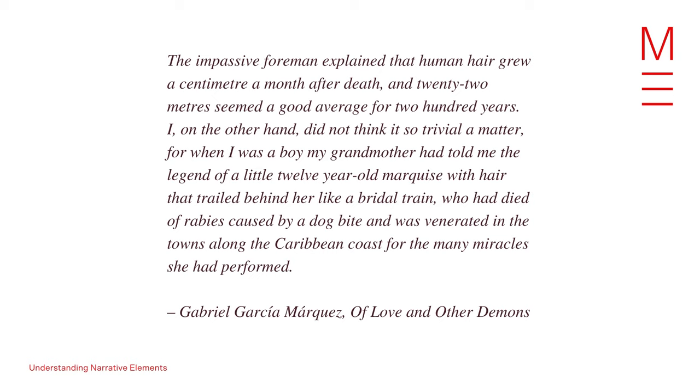'I, on the other hand, did not think it so trivial a matter, for when I was a boy my grandmother had told me the legend of a little 12-year-old marquise with hair that trailed behind her like a bridal train, who had died of rabies caused by a dog bite and was venerated in the towns along the Caribbean coast for the many miracles she had performed.' This short opening chapter is a fictive frame story to set the reader up to travel back in time to colonial Cartagena, Colombia, immersed in the story of the little 12-year-old marquise. Much like nested stories, framed stories are an effective narrative plot structure to introduce multiple perspectives in a succinct and engaging way.